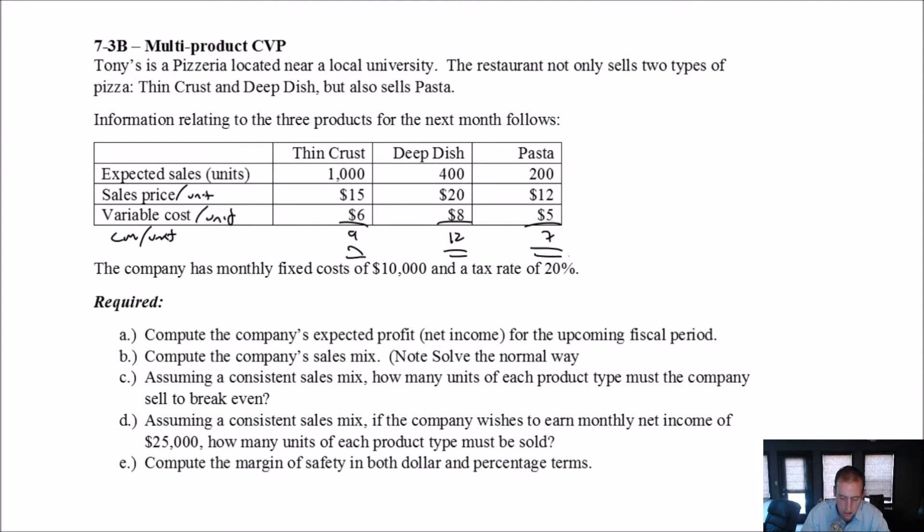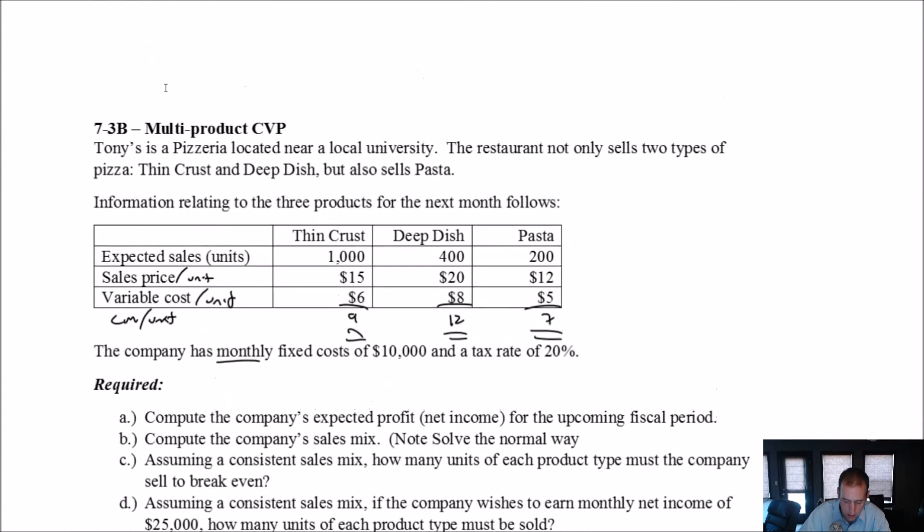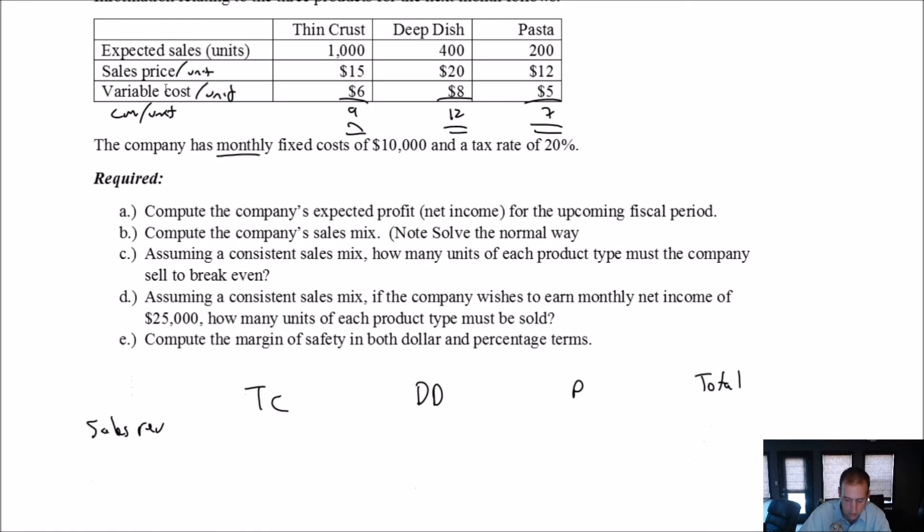And there's the info and it says the company has fixed expenses of $10,000 and a tax rate of 20%. So first thing, just quickly, let's just check the margins on all these products or CM per unit. These are per unit, right? Sales price per unit and variable cost per unit. Our CM per unit is $9 for thin crust, $12 for deep dish, and is $7 per unit for pasta. It says compute the company's expected profit for the upcoming fiscal period, which is going to be a month. Our sales revenue for thin crust is $1,000 times $15, that's $15,000. Our sales revenue for deep dish, $400 times $20, that's $8,000. And $200 times $12, that's just $2,400 for the pasta. So, that's $25,400 in total.